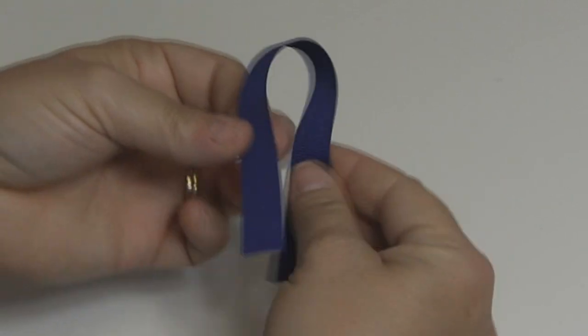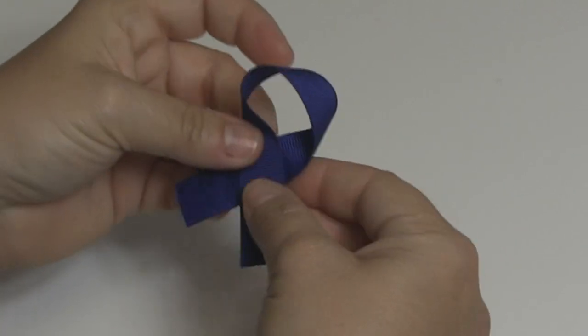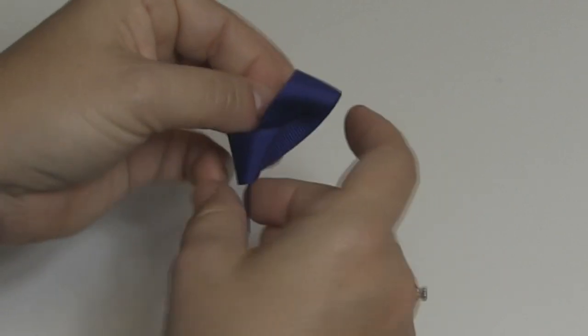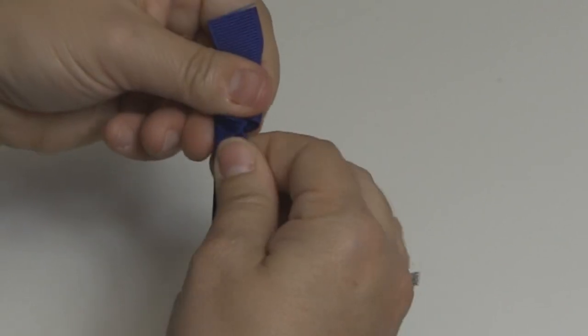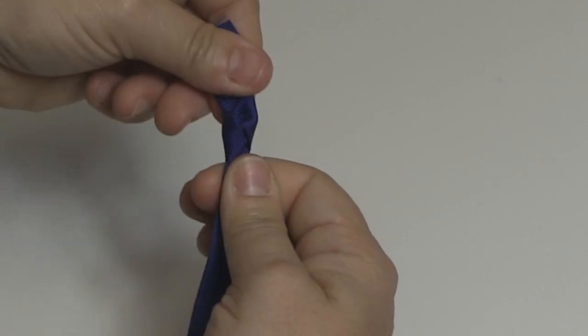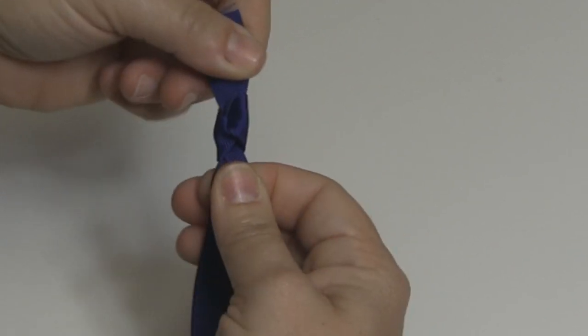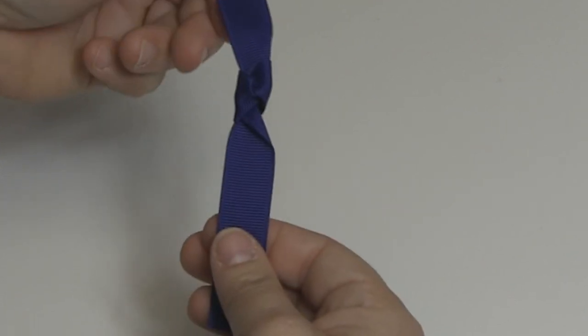Next we're going to make the knot for the center of our bow. This is with our 6.5 inch length of 5.8 inch wide ribbon. Just make a simple knot. You don't want to pull it super tight, you want it to be a little bit loose because it's going to lay on the center of our bow. We're going to put that to the side.